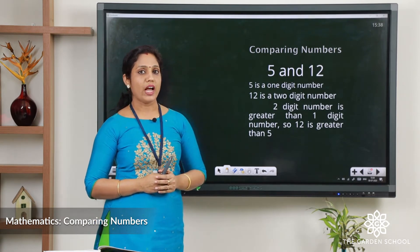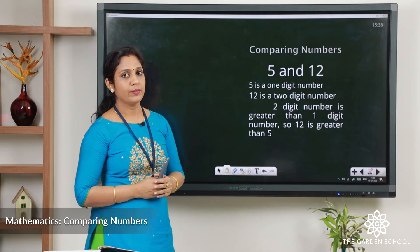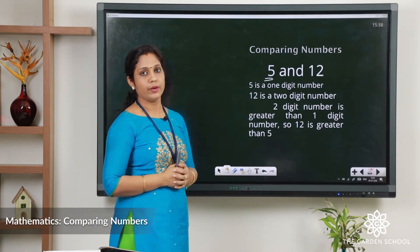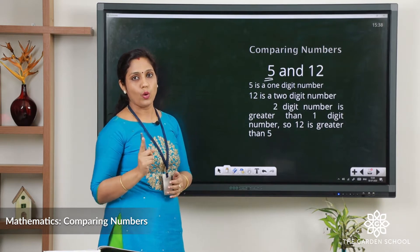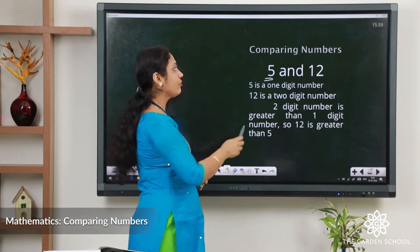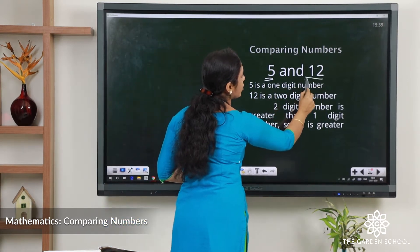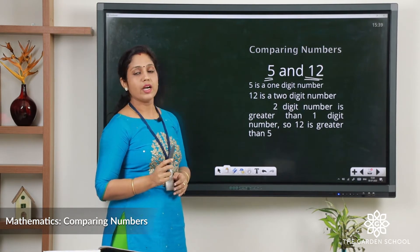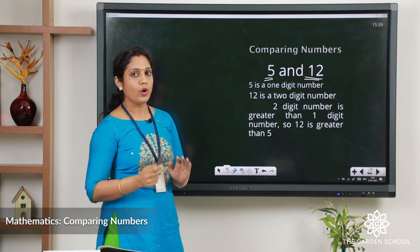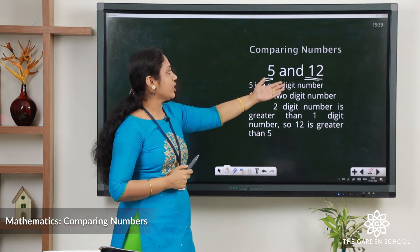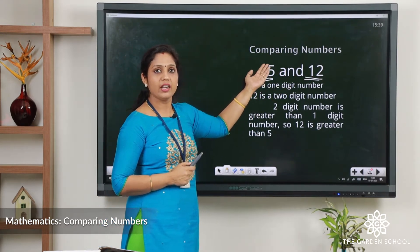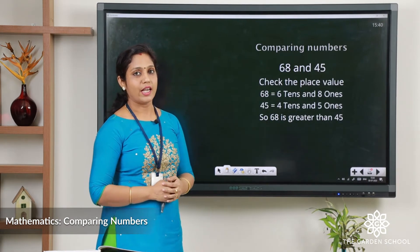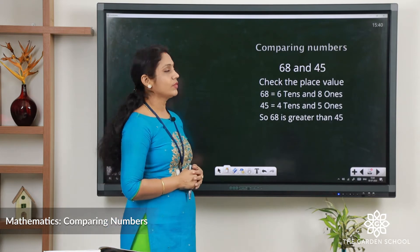Here we have another example — the numbers are 5 and 12. Is 5 a 1-digit or 2-digit number? 5 is a 1-digit number, and 12 is a 2-digit number. A 2-digit number is always greater than a 1-digit number, so we can say that 12 is greater than 5.